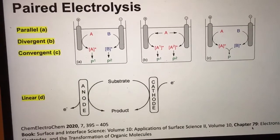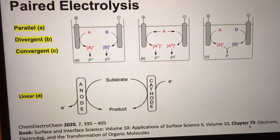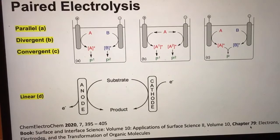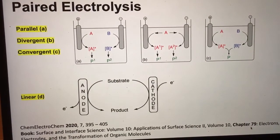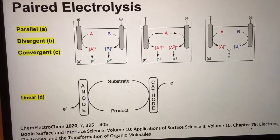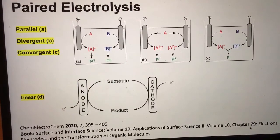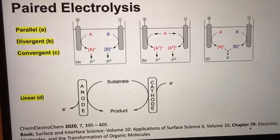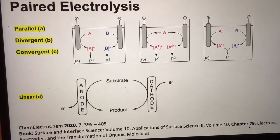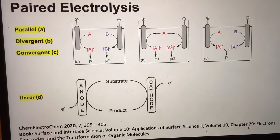In pair electrolysis, synthetically useful products are generated from both electrodes to optimize both atom economy and energy of the reaction. The development of pair electrochemical reactions is important. Four different types of such pair electrolysis have been reported.